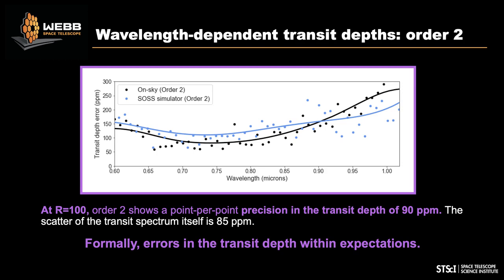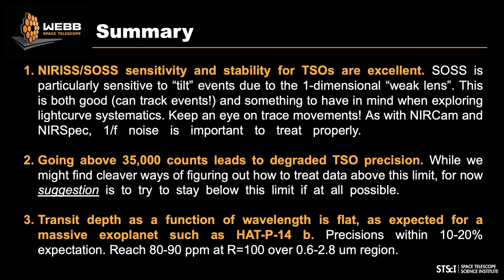On-sky results in black match the simulations well. This looks very promising for TSO needs. In summary: NIRISS SOSS sensitivity and stability for TSOs is excellent. Key heads-up: going above 35,000 counts can lead to degraded TSO precision, so the suggestion is to not exceed that threshold. Transit depth as a function of wavelength is flat — good news for TSOs.